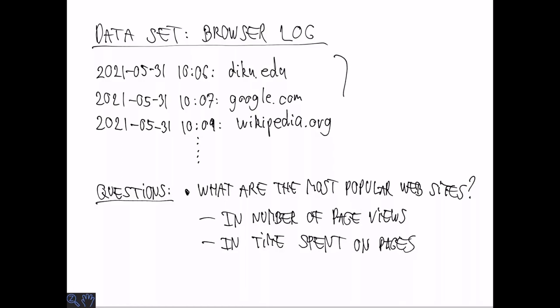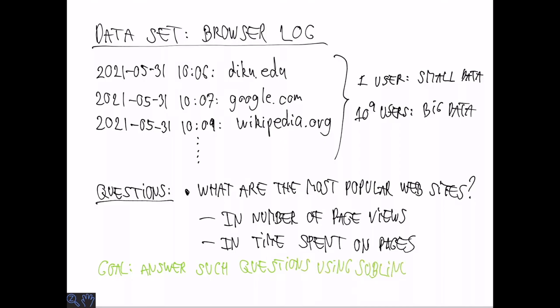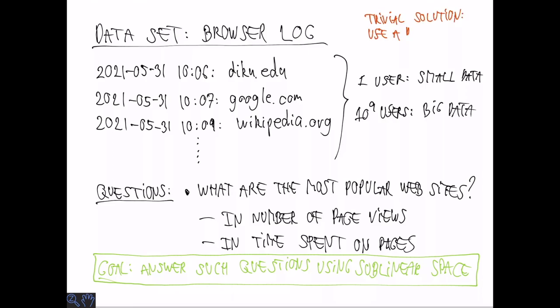Of course if this is just data coming from one machine or one user, this is quite pretty small data and it's easy to solve. But what if you have a billion users? Then we have a big data problem. The goal that we will discuss in this lecture is how to answer such questions using sublinear space. This improves on the trivial solution where you just use a dictionary to keep track of the mapping between websites and counts. For big data problems, linear space is just not feasible.